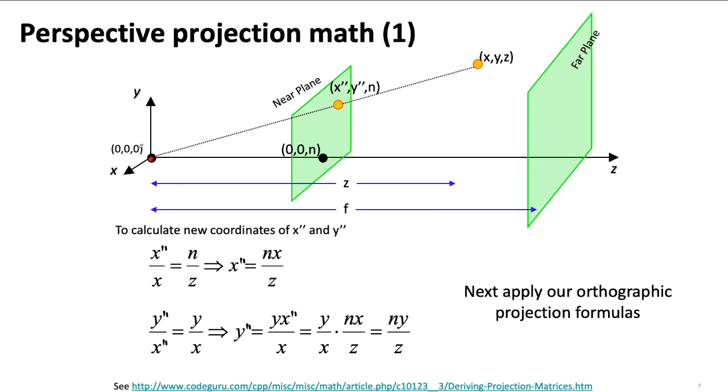Again, we've assumed that the camera has moved into this point. We're going to basically take all of our points in space and run them along lines that go through this point. And what we want to do is see where they intersect the near plane.